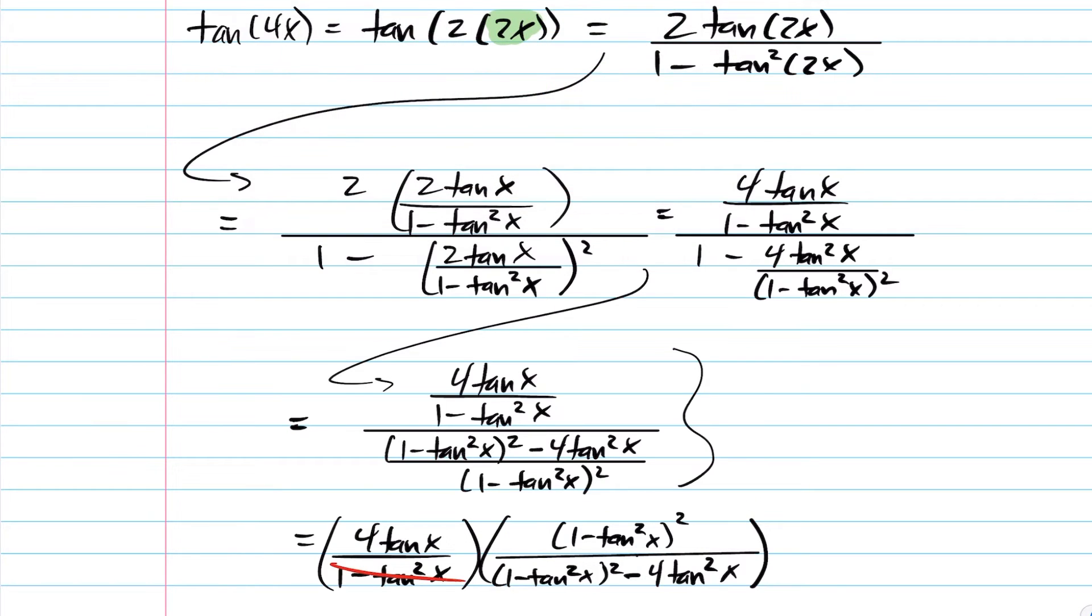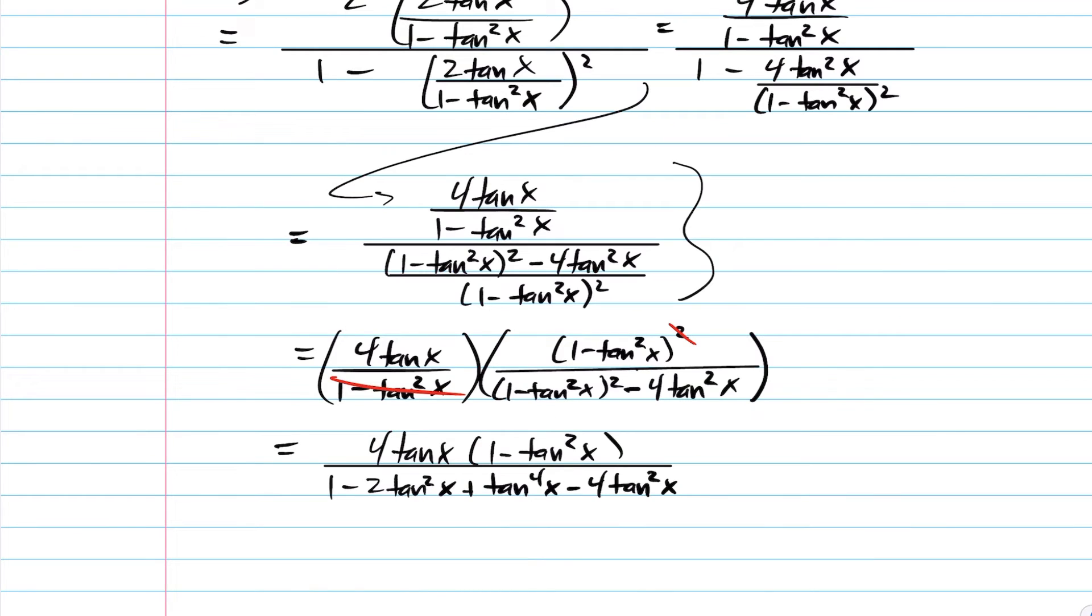I'm going to go ahead now and expand out this expression on the bottom, giving us the following. And expand at the bottom here. You'll notice I square the first, I get 1, first times second times 2 gives me negative 2 tan squared x, and then square the last gives me tan to the power of 4x.